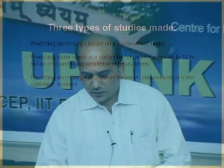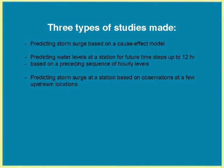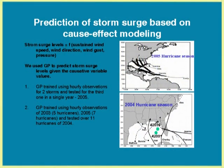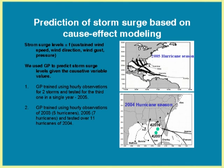There are three types of studies being carried out. The first is prediction of storm surge based on cause-effect modeling. The 2005 and 2004 hurricane seasons show a number of hurricanes occurring in the Gulf of Mexico region, making it very prone to such events. People need to predict the exact water level to support offshore and coastal operations. There are many models deployed in this area, but application of soft computing tools is always welcome. This study is carried out at specific stations 42001 and 420039, in deep water and shallow water regions.